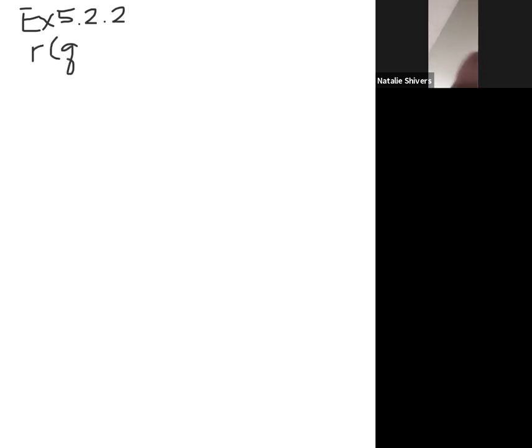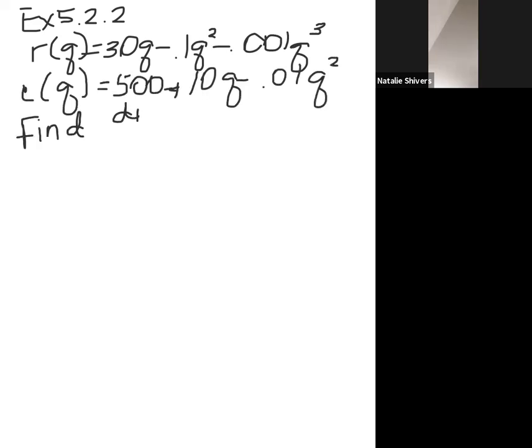So let's do example 5.2.2. This one gives it in function notation r(q) equals 30q minus 0.1q squared minus 0.001q cubed. So we're going to do the same steps that we did in the first problem. But we're going to worry about plugging in q equals 50 at some point. So what I'm going to do here is the same first step.